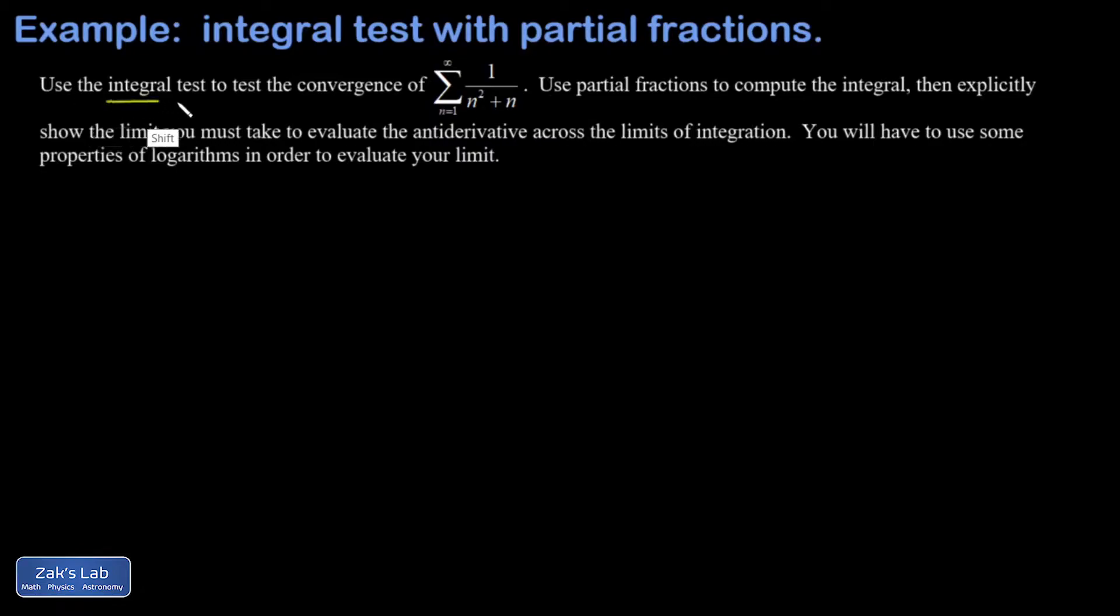And yet we're asked to use the integral test, so let's see what it looks like. I take the integral of the related function 1 over x squared plus x dx on 1 to infinity, and I'm hoping to find a finite number out of this. We're already given the clue that we should use partial fractions for this.